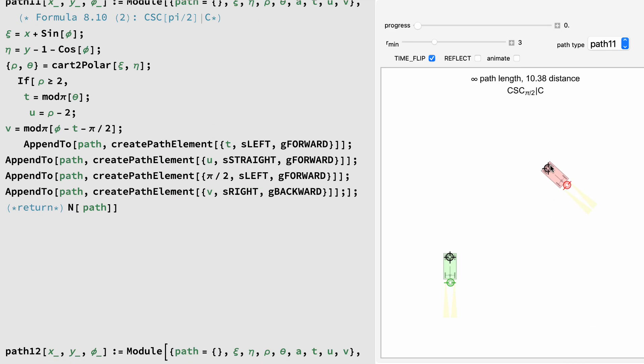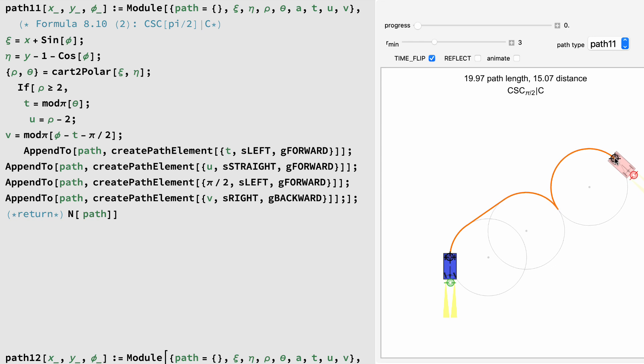Path 11 is curve, straight, curve of 90 degrees, gear shift, curve. This also has only two trig operations and a Cartesian to polar conversion.